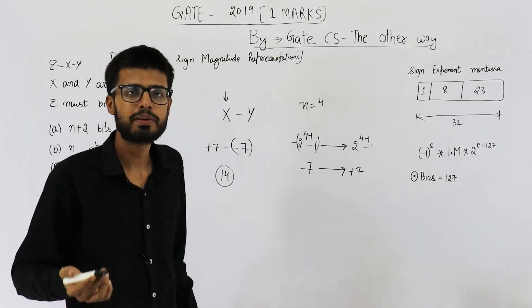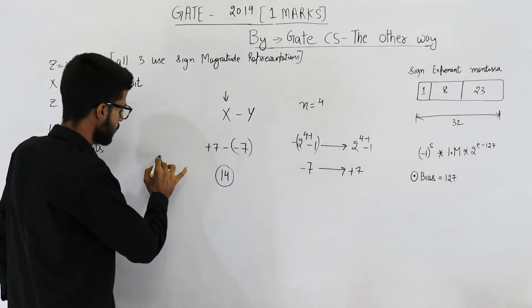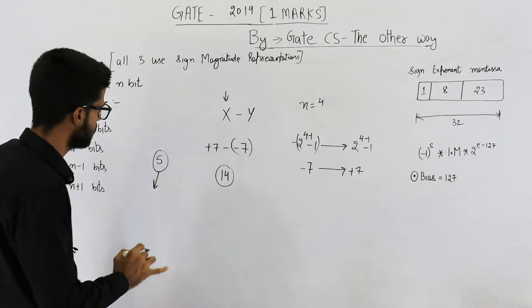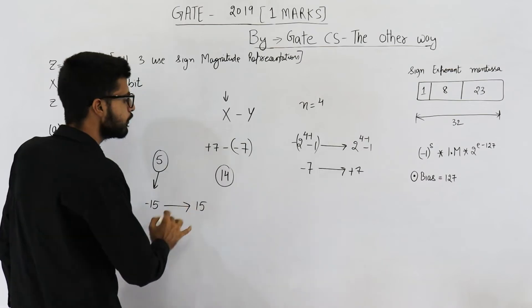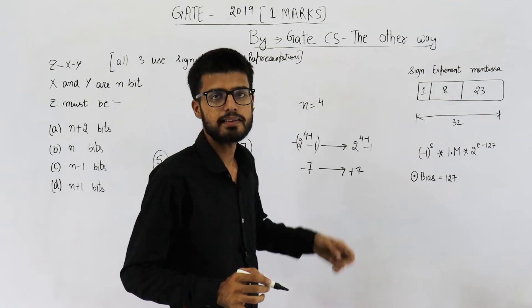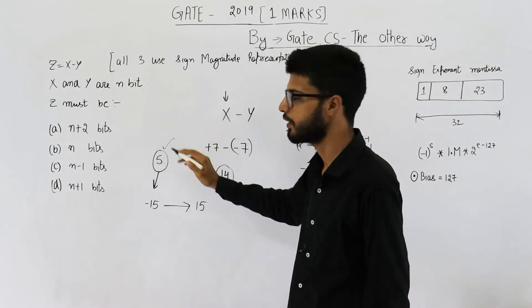How many bits are required to represent 14? It's 5 bits. Because with 5 bits, the range that you will get is minus 15 to plus 15. 14 is in this range. That means if the numbers are of 4 bits, in worst case, the result can be of 5 bits.